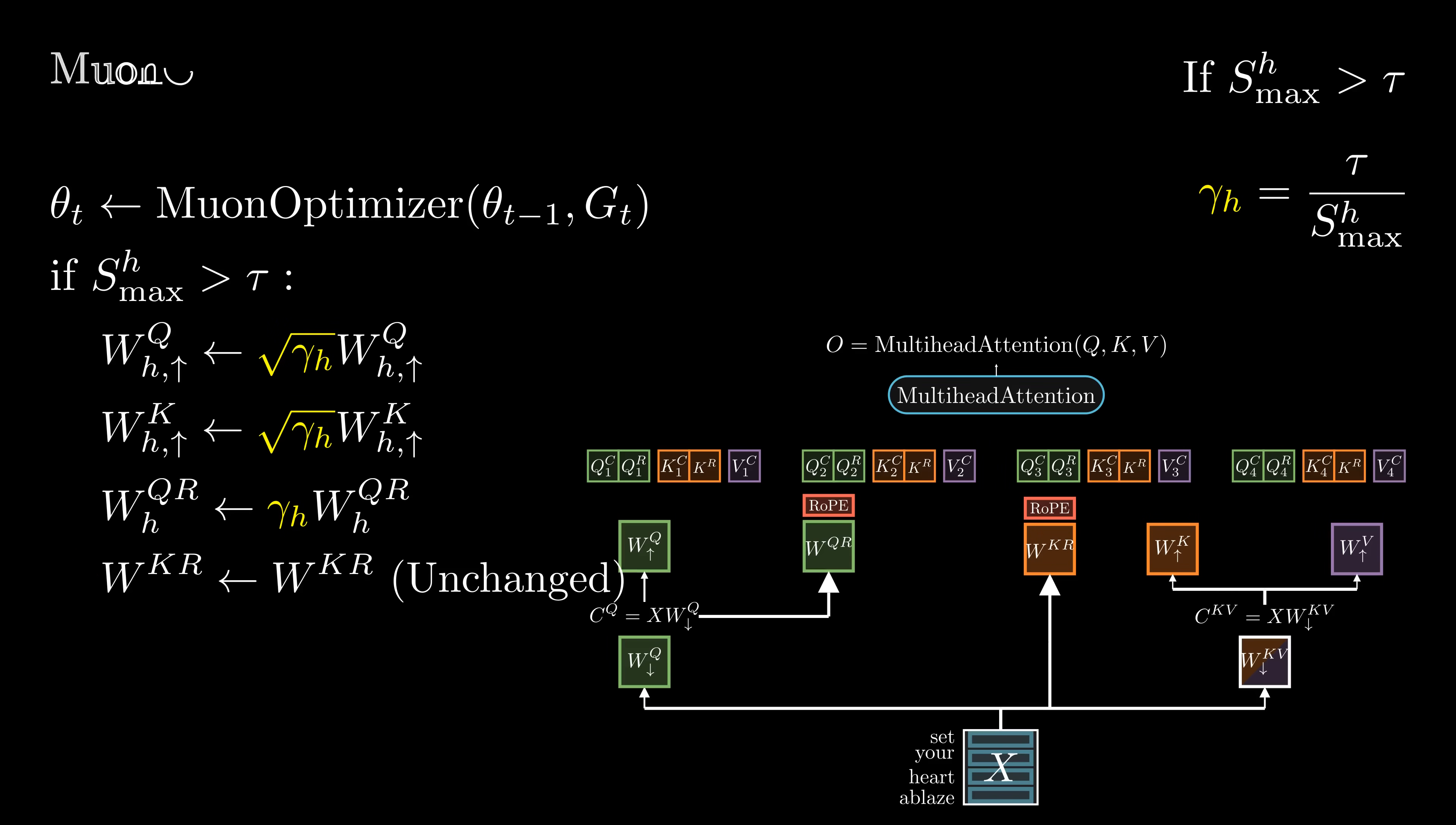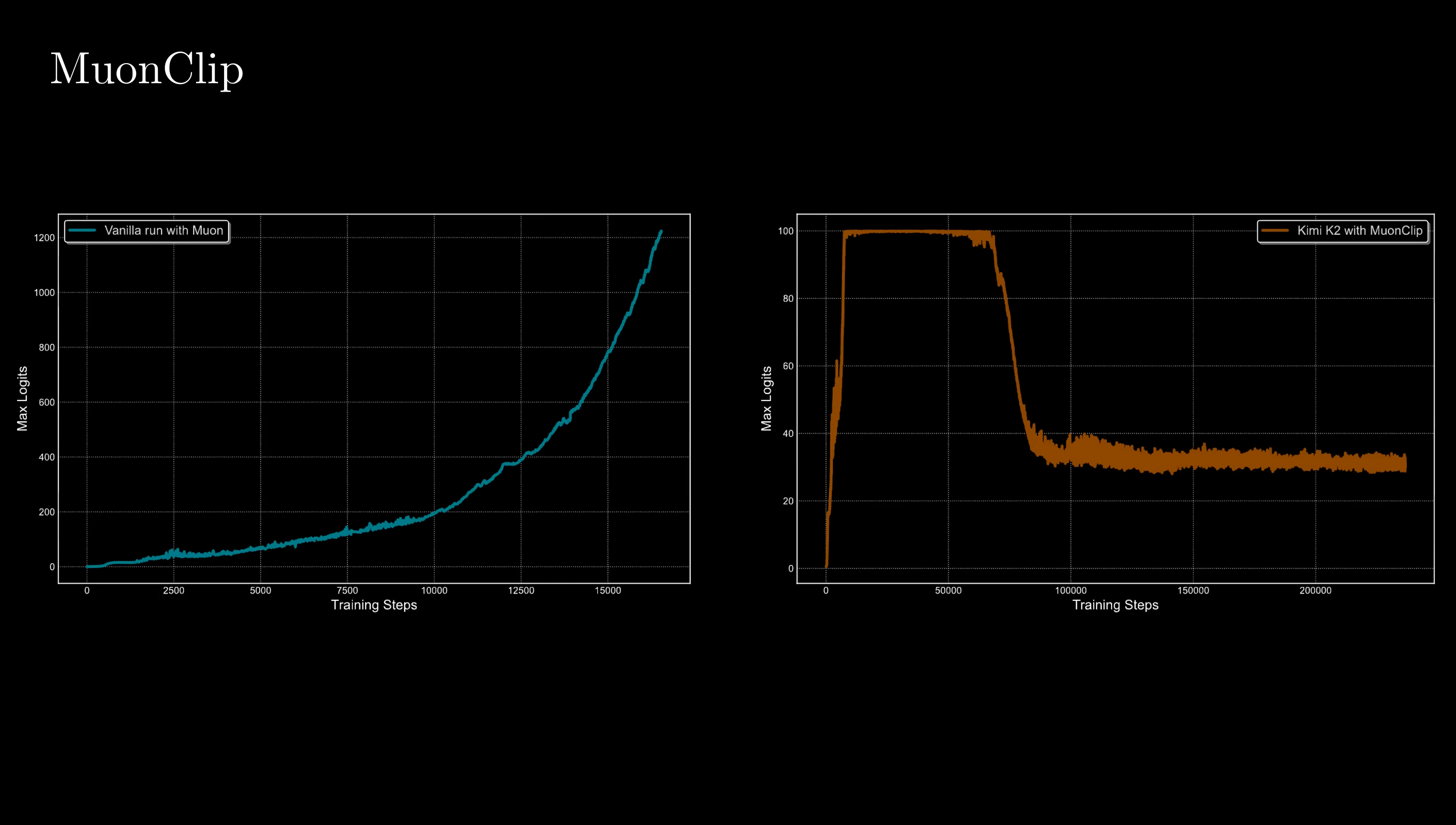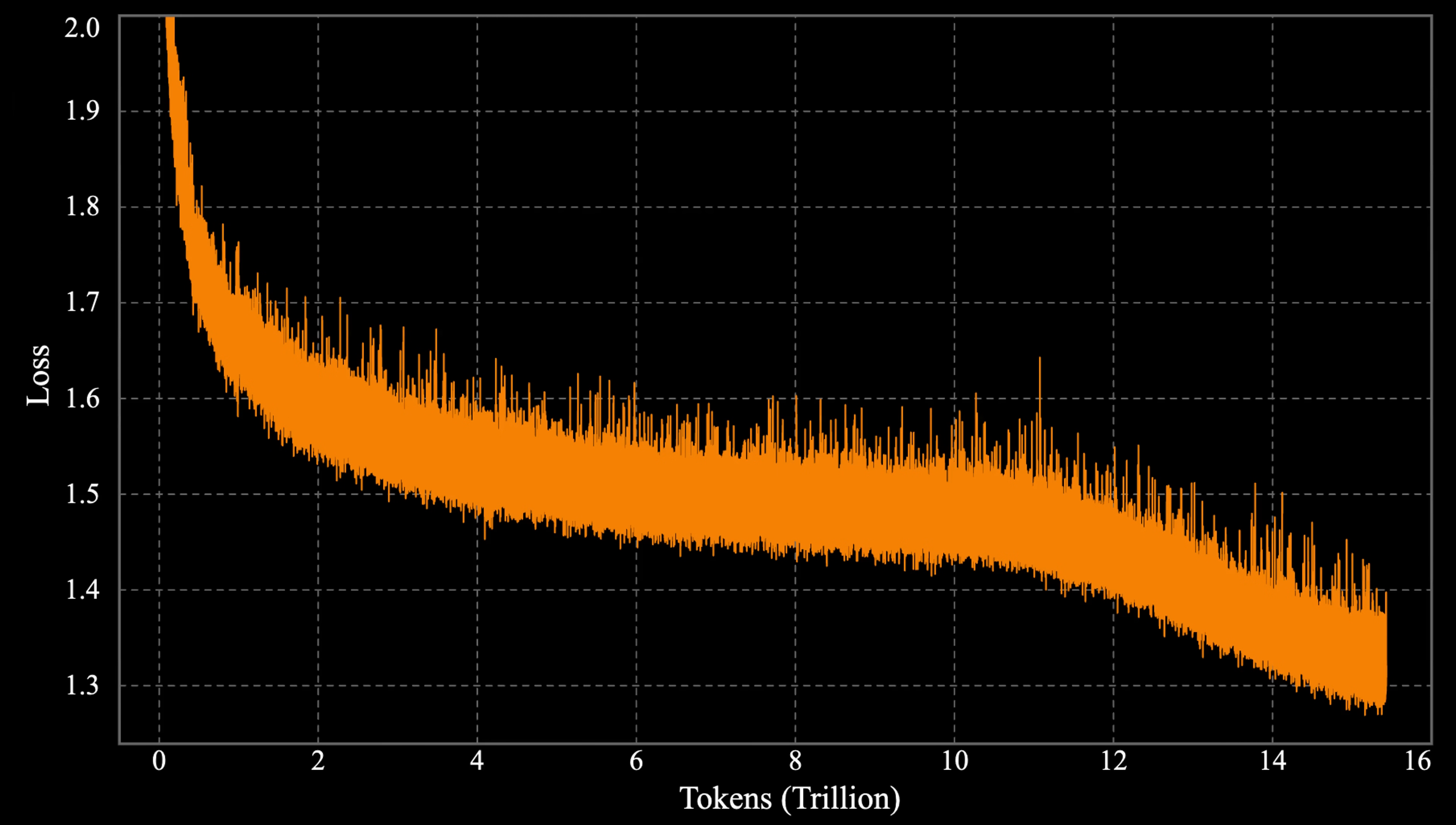This technique is called Muon Clip. Let's compare training with and without Muon Clip. With Muon Clip applied as shown on the right, the maximum attention logits are effectively kept and quickly stabilized, demonstrating the effectiveness of QK Clip regulation. This helps the optimizer maintain steady and reliable training.